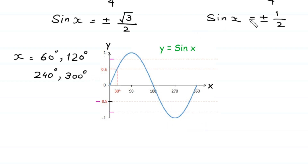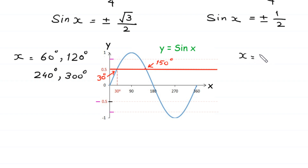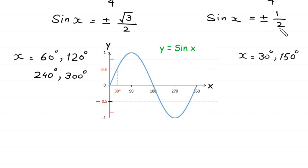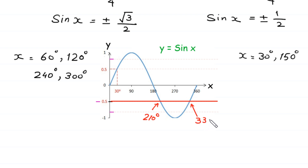When sin x = +1/2, the line intersects at x = 30° and x = 150°. When sin x = -1/2, the line intersects at x = 210° and x = 330°. So these are the eight solutions of x: 30°, 60°, 120°, 150°, 210°, 240°, 300°, and 330°.